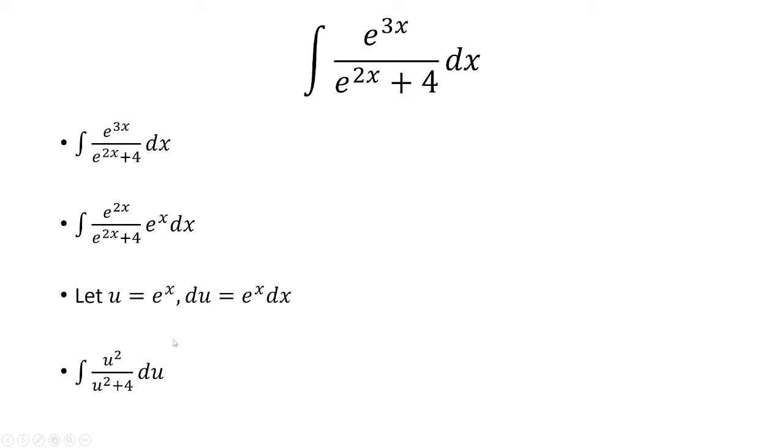Now I'm going to use algebra here and say that u squared is the same thing as u squared plus 4 minus 4, because the 4s cancel. And now I'm going to separate this into two separate fractions. The first fraction is just u squared plus 4 over u squared plus 4, which simplifies to just 1.